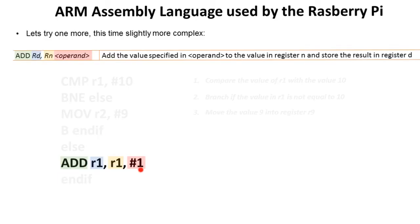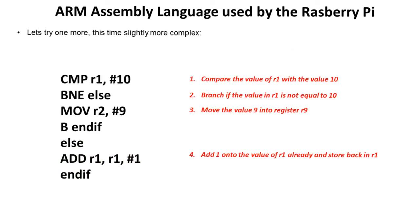Now, if we ended up down here, after our first branch, we can see we now add the value specified in operand, which is the actual decimal value 1, to the value in this register, and then store the result back in itself. So have you figured out what the program does? It starts by comparing the value in register 1 with 10. It branches if the value in 1 is not equal to 10, and it branches down here. If it is, then we move the value 9 of the register, and then we end.